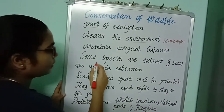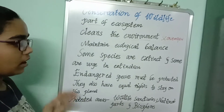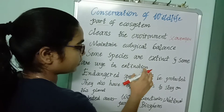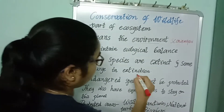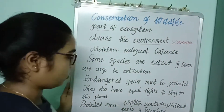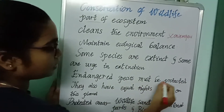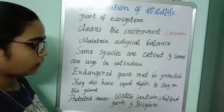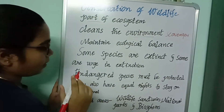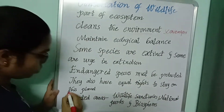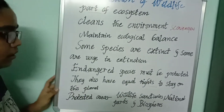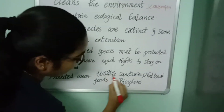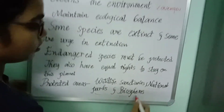Coming to wildlife, some species are extinct — they have already disappeared, like the dinosaur. And some are under threat of extinction — they are going to disappear. Examples are sparrows. Endangered species must be protected. Wildlife also have equal rights to stay on this planet. The protected areas for wildlife are called Wildlife Sanctuaries, National Parks, and Biospheres.